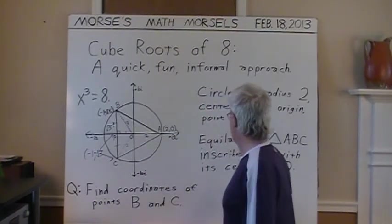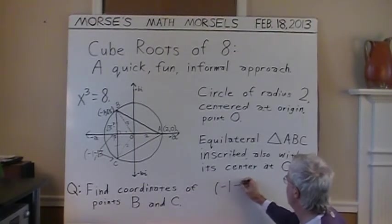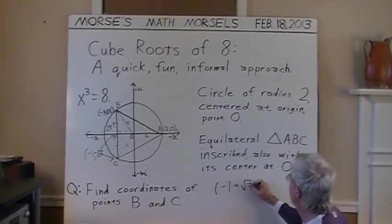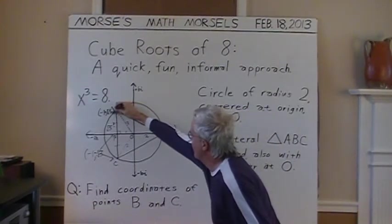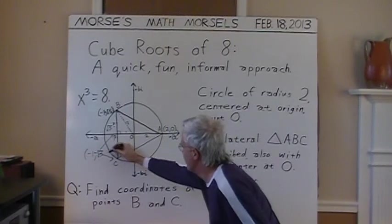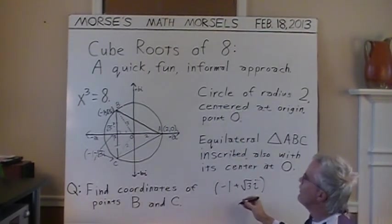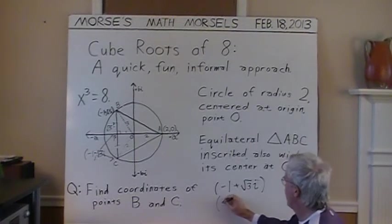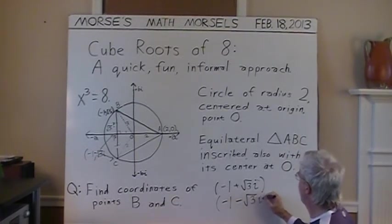So, I'm claiming that negative one plus square root of three i, because this is a bi plane, remember, so that has to have an i there, and so does this, is another root of the cube root of eight, and finally the negative one minus square root of three times i.